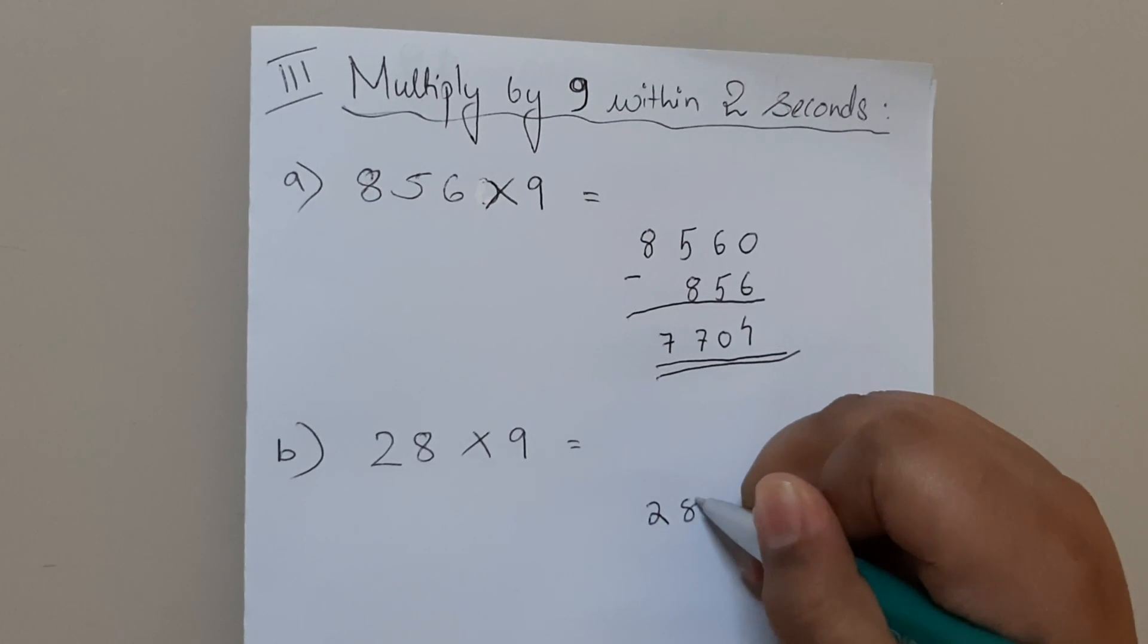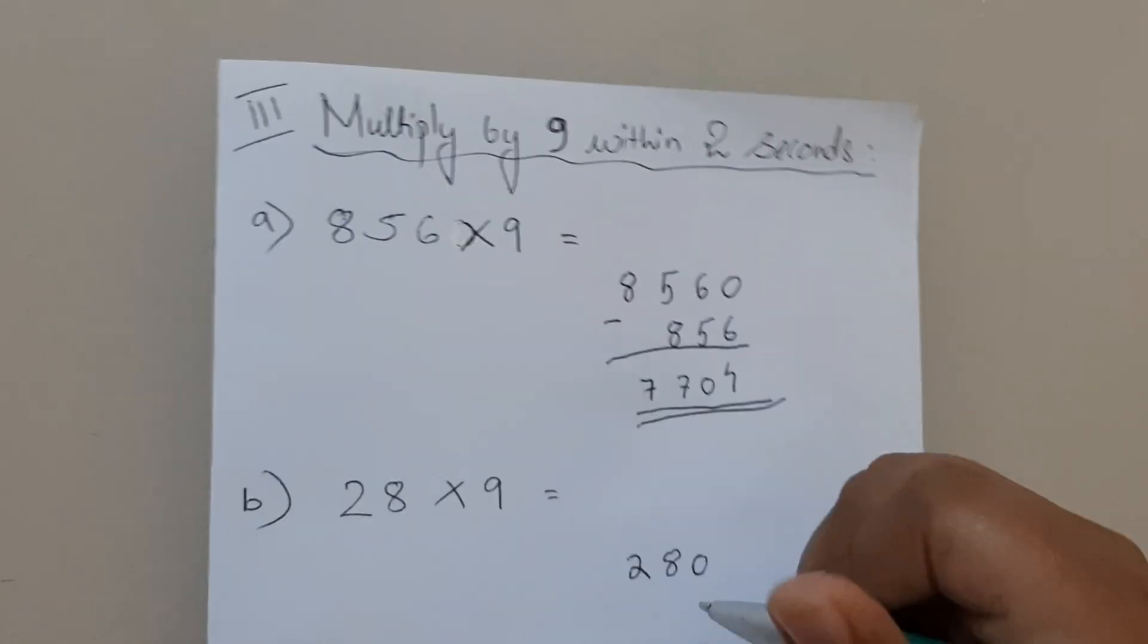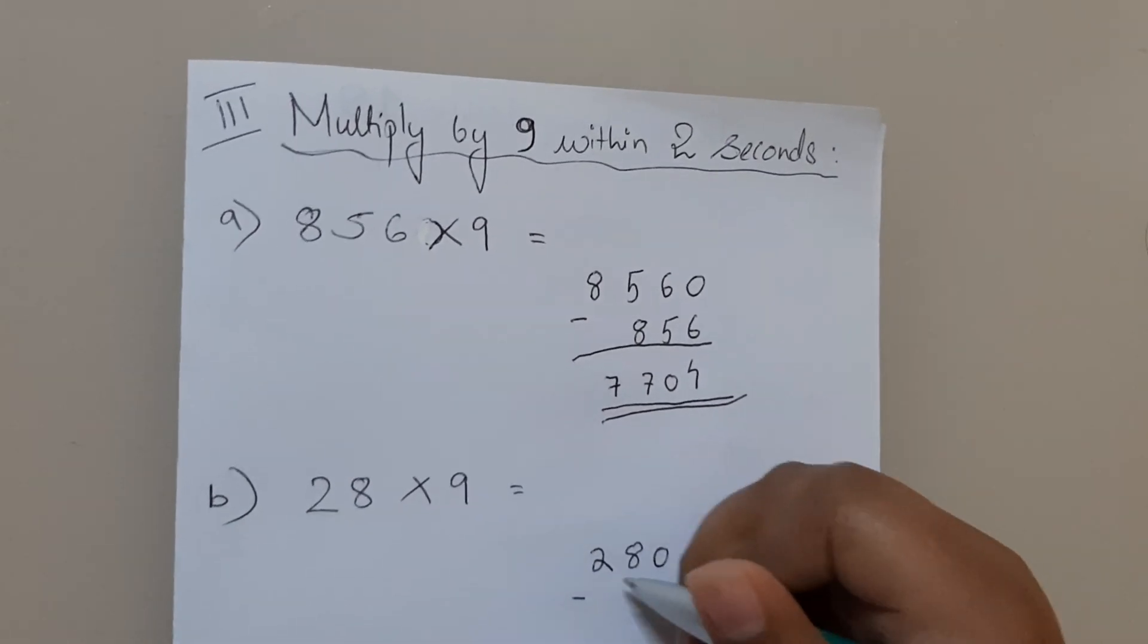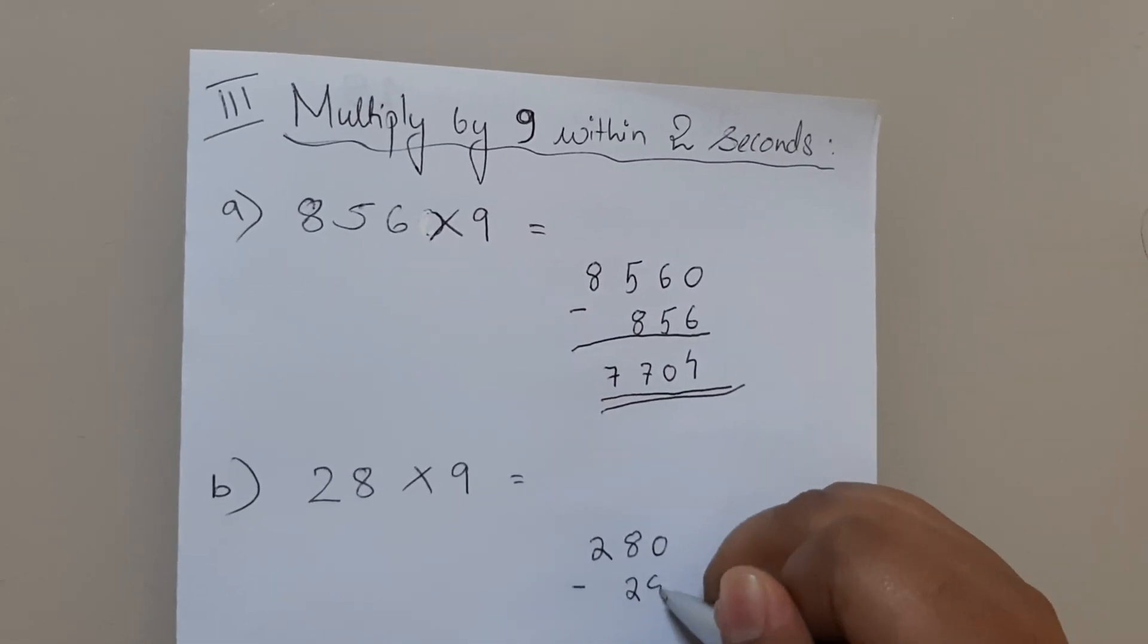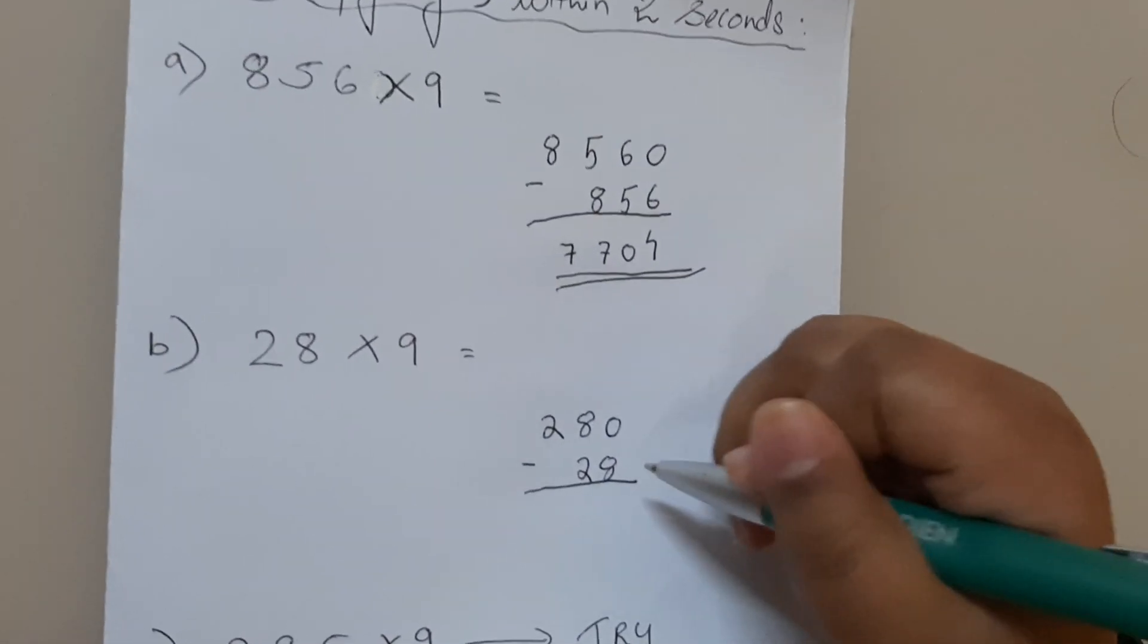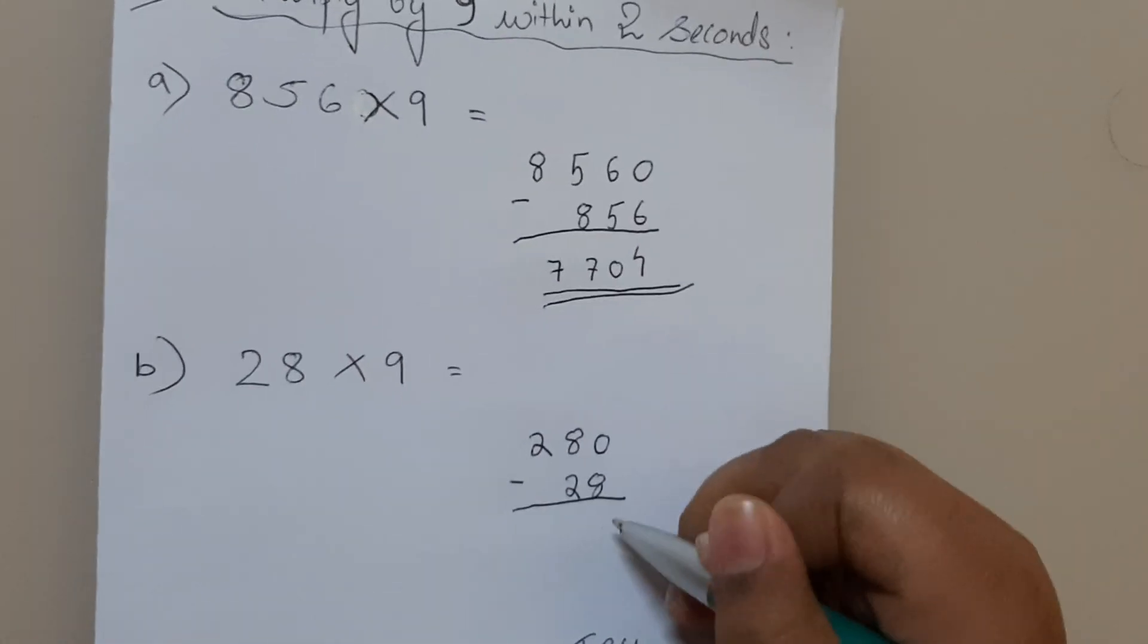Add a zero and now write the original number. This one is 4, this one is 8.